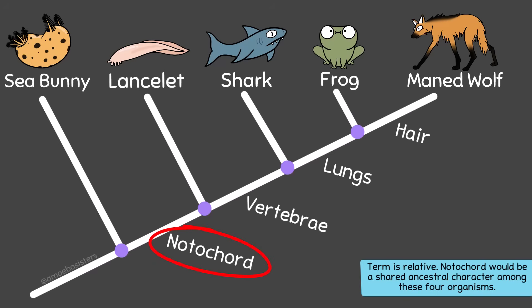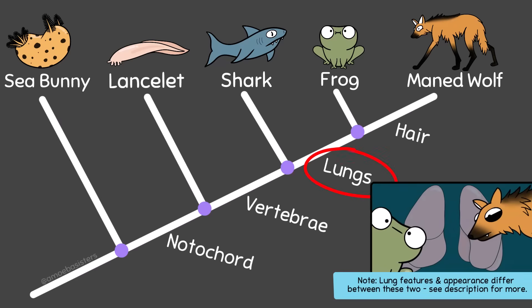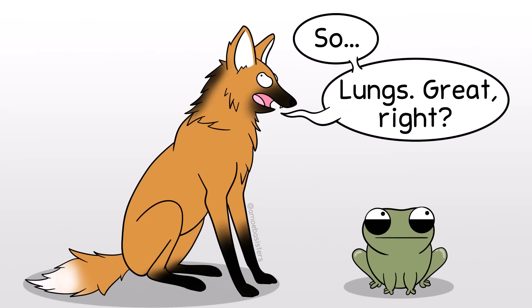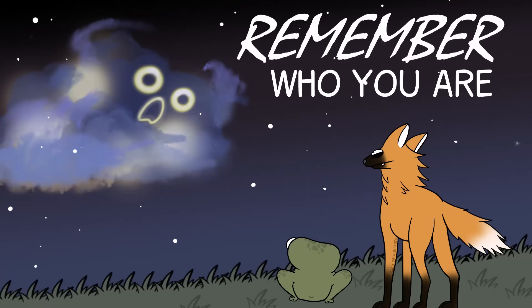The ancestral species of these four organisms, right here at this node, had this notochord. In this cladogram, lungs are considered a shared derived character for the frog and maned wolf, indicating that this trait evolved in a common ancestor they share. Shared derived characters are not found in all organisms in a cladogram, which makes them useful for inferring how organisms may be related. This shared derived character supports that the maned wolf and frog share a more recent common ancestor with each other than either does with the shark.